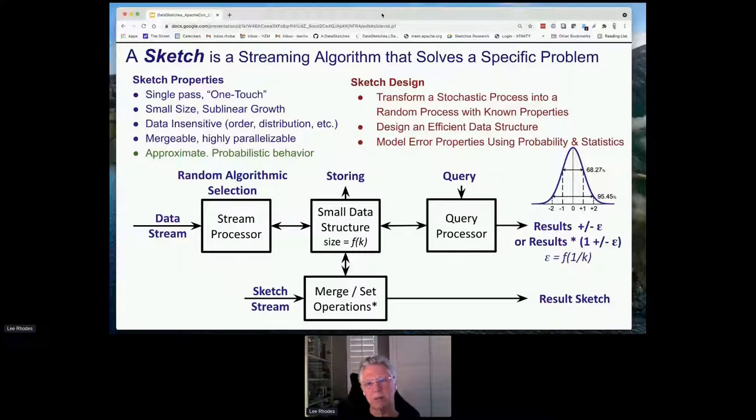The third major component is a query processor. After feeding data into the sketch in a stream fashion, or even while it's being fed, you can query the sketch and say, what is my result so far? What is my unique count? You can query for quantiles, sample distributions and so on. That's the query processor. It will produce some result, and that result is either plus or minus some epsilon error, which is usually Gaussian, giving you a confidence interval of where the true answer lies.